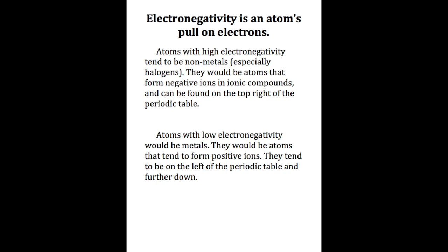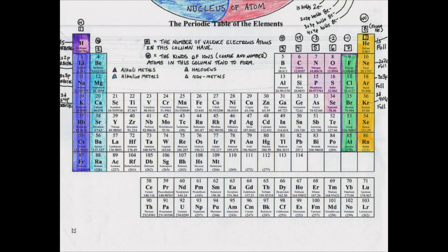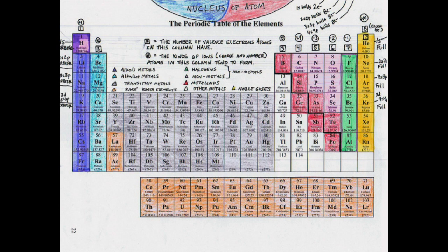In general, as we move up and right on the periodic table, electronegativity increases. This is discounting noble gases and a few like hydrogen that do not follow the general trend.